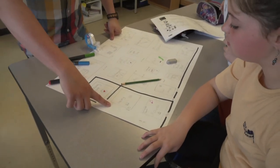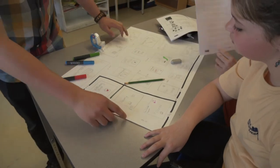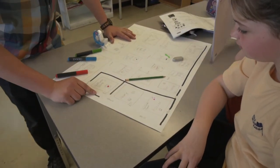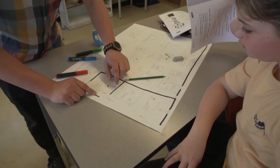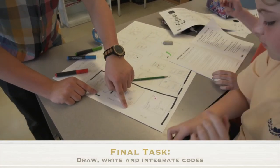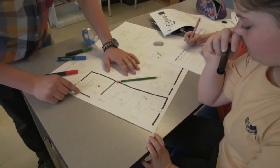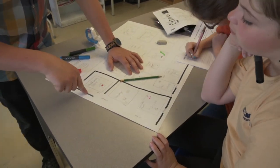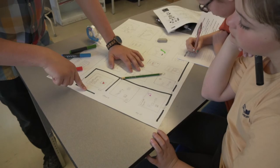Once I felt that they were comfortable enough, then it was up to them to complete the final task, which was drawing their map, writing their itinerary, and then drawing the codes on the map so that the robot would follow the itinerary that they wrote.